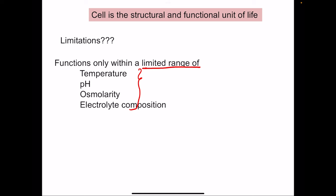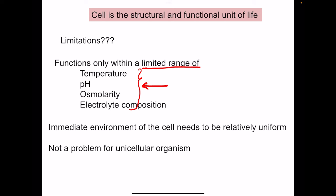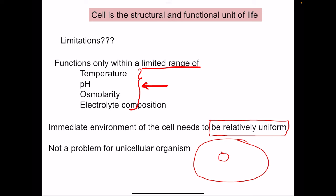These components — temperature, pH, osmolarity, electrolyte composition — have to be maintained within a limited range. If they shift outside that range, the functioning of the cell will be compromised. The immediate environment of the cell needs to be relatively uniform. This is not a problem for unicellular organisms because their environment is huge — excretory products are lost in the sink of the environment.